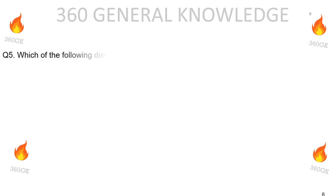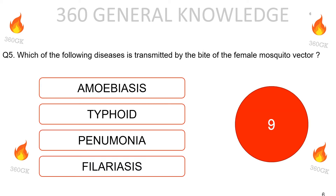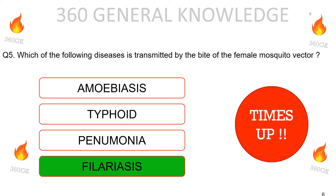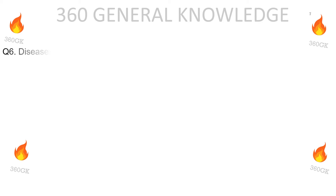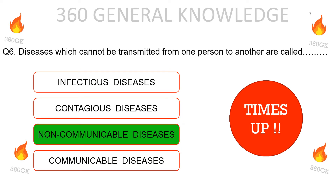Which of the following diseases is transmitted by the bite of the female mosquito vector: amoebiasis, typhoid, pneumonia, or filariasis? The correct answer is filariasis. Diseases which cannot be transmitted from one person to another are called: infectious disease, contagious disease, non-communicable disease, or communicable disease. The correct answer is non-communicable disease.